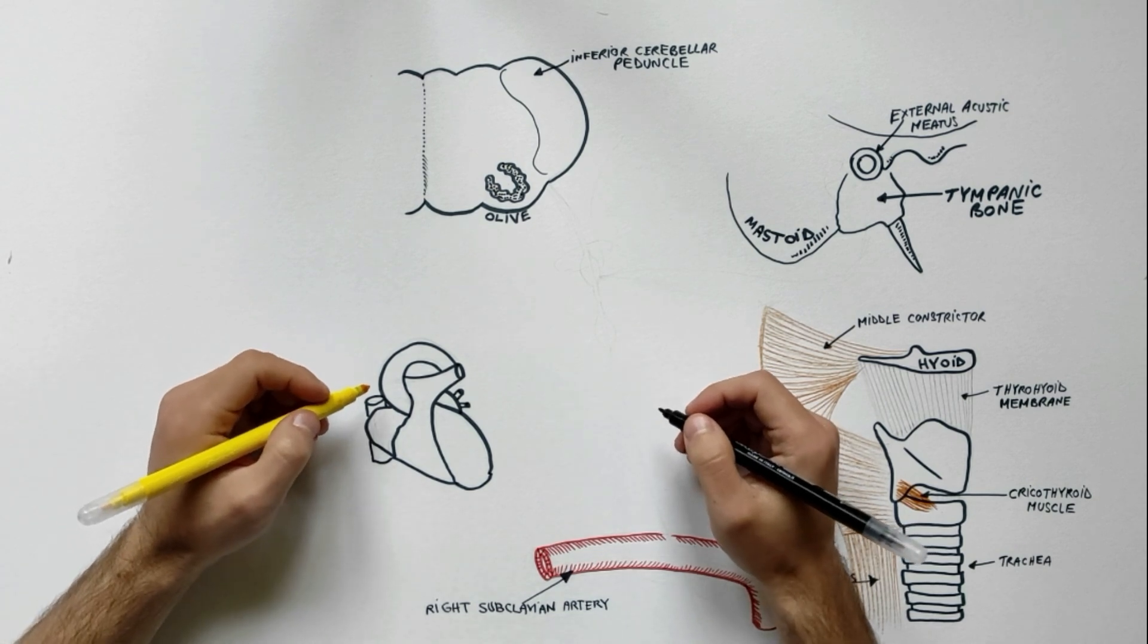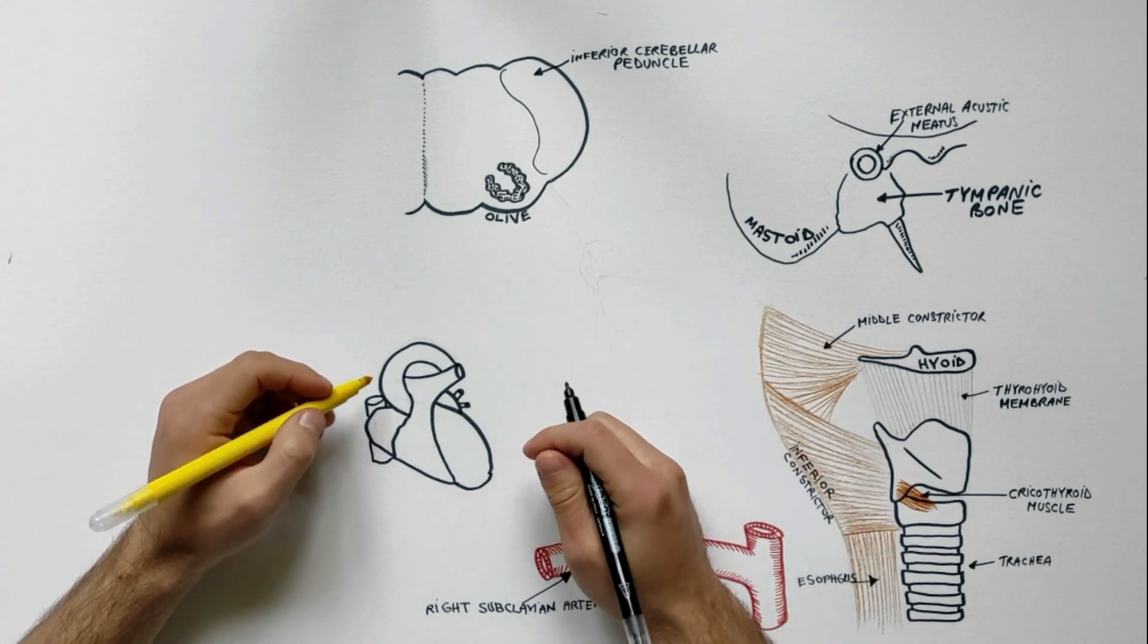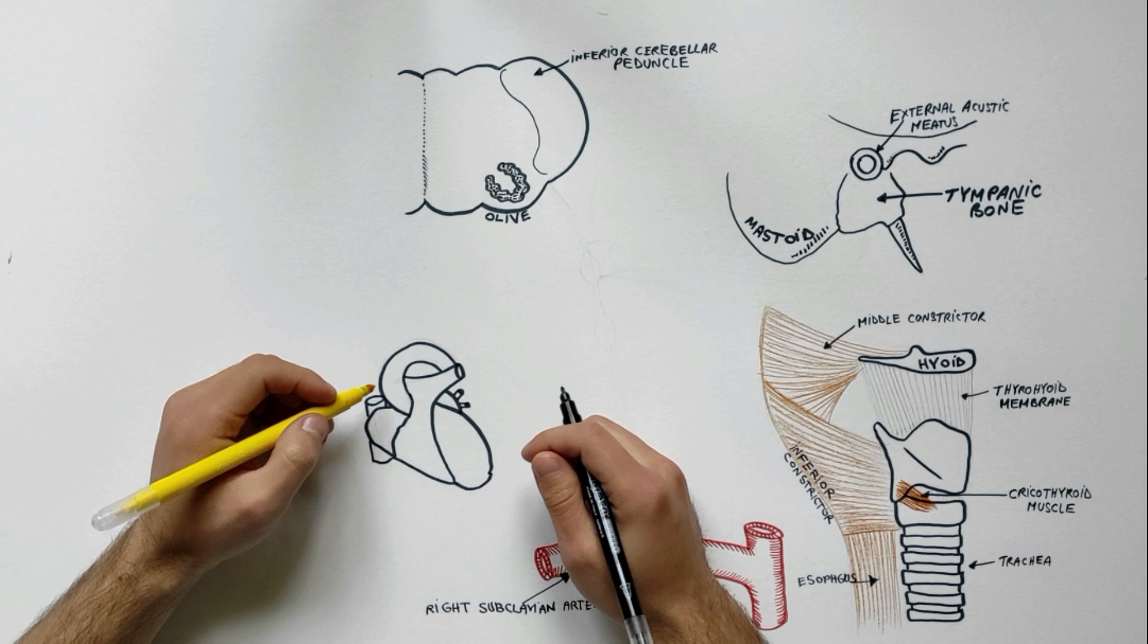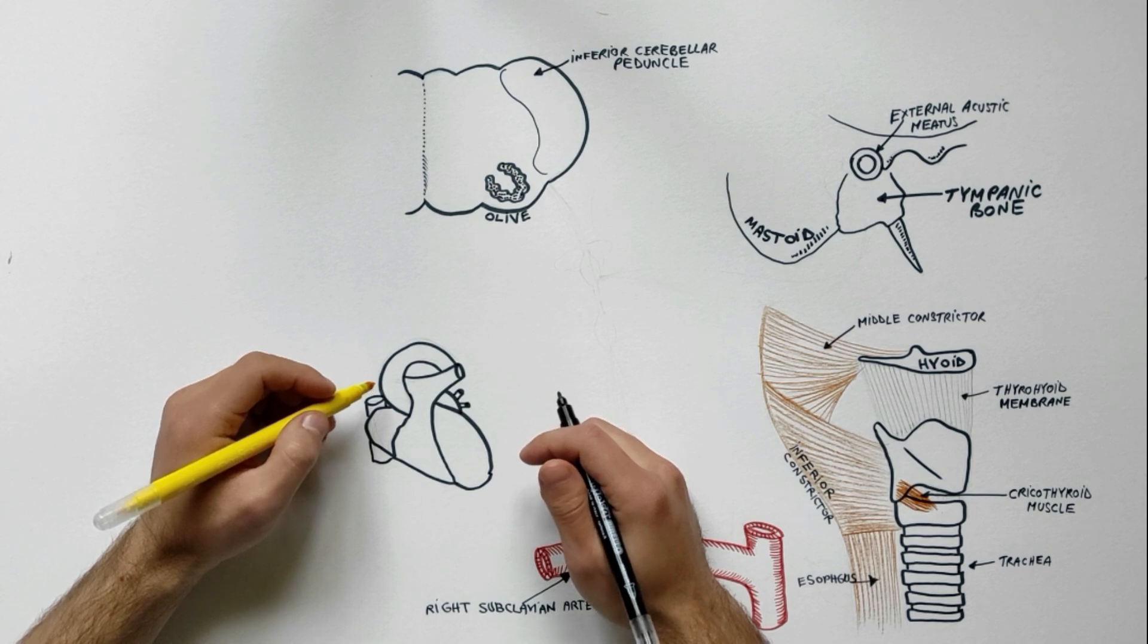The vagus nerve is the tenth cranial nerve and is a mixed nerve. Its field of distribution extends beyond the head and neck to the thorax and abdomen, but in our tutorial we will focus on its distribution in the head and neck region.